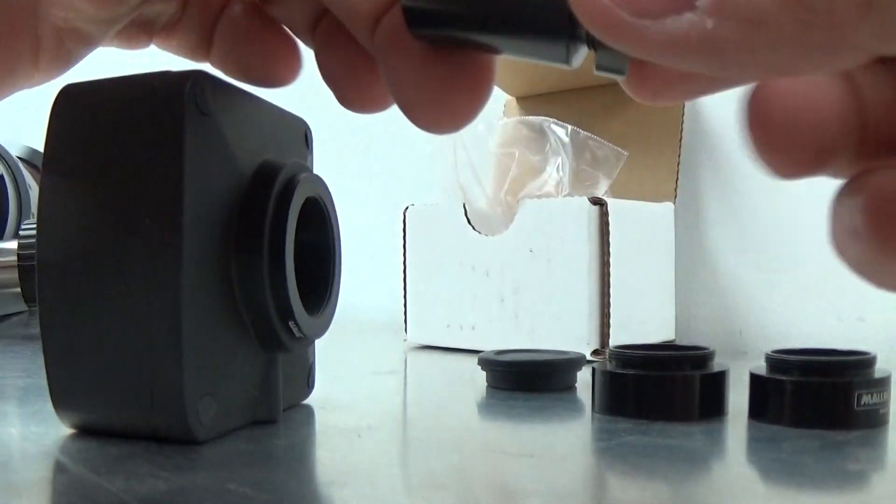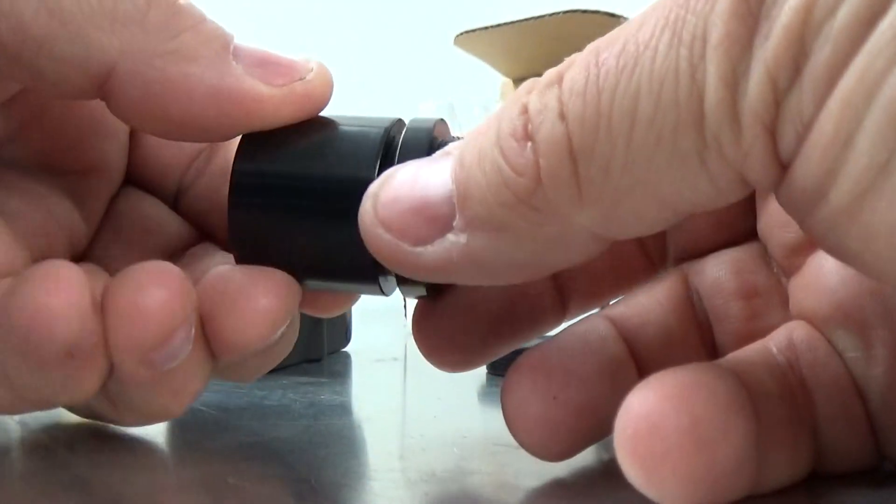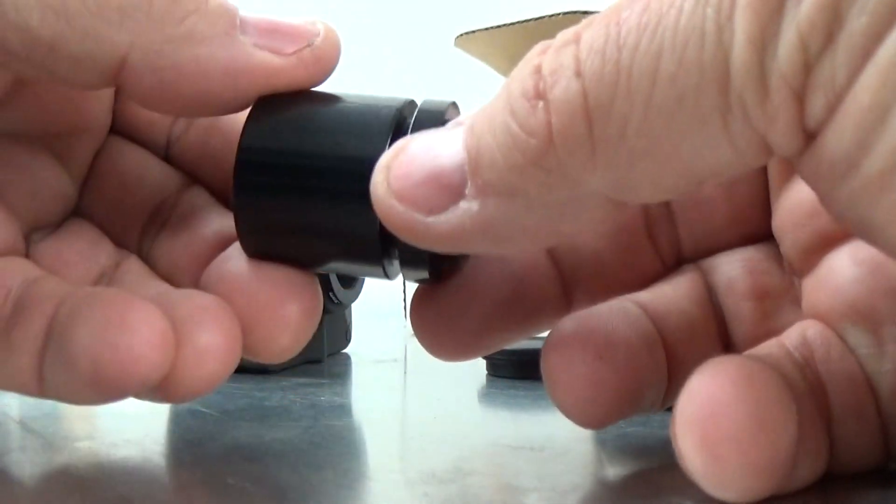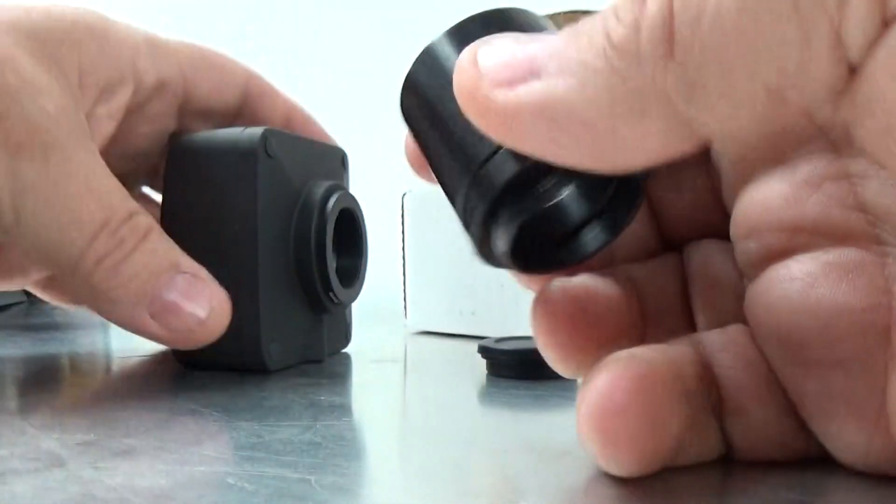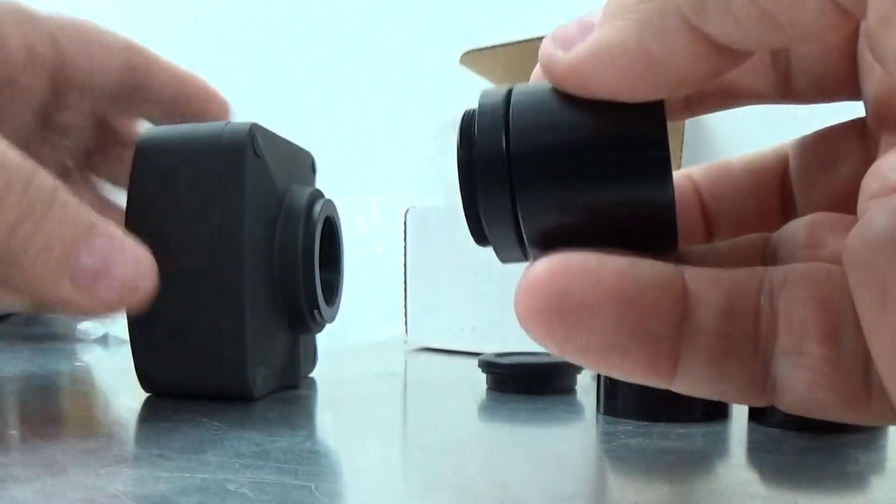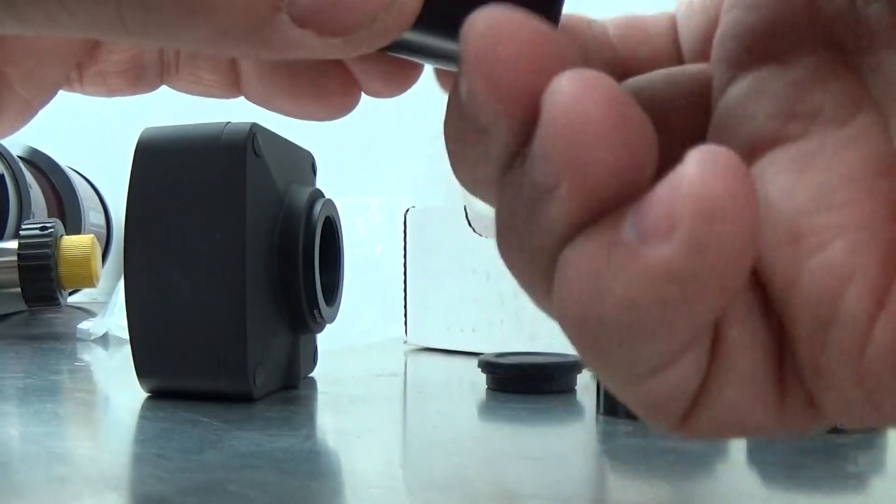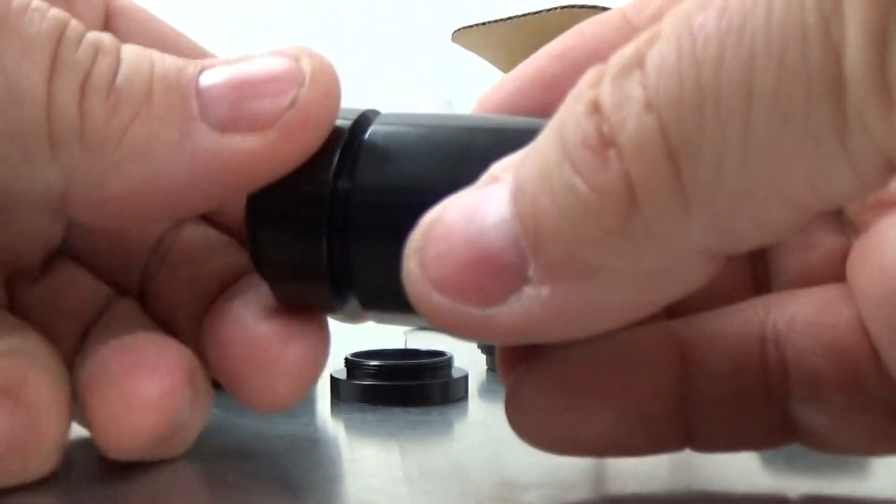This is what we're going to do. We're going to add the 5 millimeter spacer to the camera. Once it's screwed in all the way, you can then screw that in completely. I would recommend using it with a few 10 millimeter spacers.